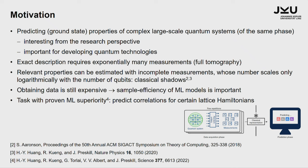There are some solutions or ways to tackle this. One is the so-called classical shadows, developed in the last five years by Aaronson and then Huang, Kueng, and Preskill. Preskill won the Bell Prize for the classical shadows. These classical shadows are a way to randomize the measurements and then, with only a logarithmic number of measurements in the number of qubits, have an approximation to the density matrix that allows predicting certain properties, like two-point correlations.